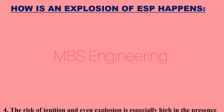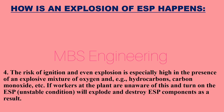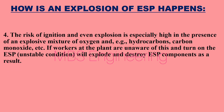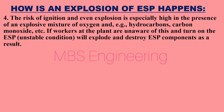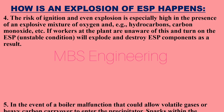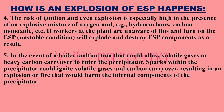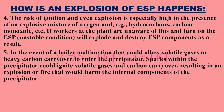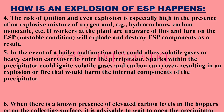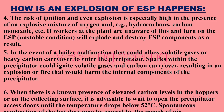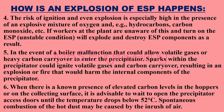Point 4: The risk of ignition and even explosion is especially high in the presence of an explosive mixture of oxygen, hydrocarbons, and carbon monoxide. If plant workers are unaware of this and turn on the ESP under unstable conditions, it will explode and destroy ESP components. Point 5: In the event of a boiler malfunction allowing volatile gases or heavy carbon carryover to enter the precipitator, sparks within the precipitator could ignite them, resulting in an explosion or fire that would harm the internal components.